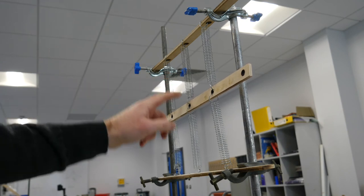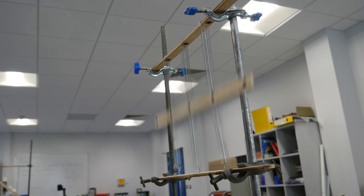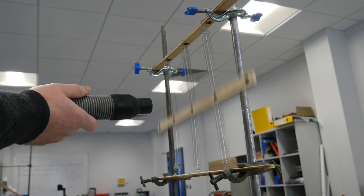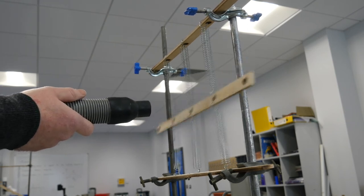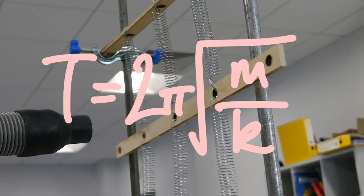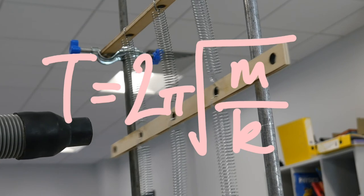So this one's stiffer because it's got three springs in parallel with each one. So you see it's got a higher natural frequency because the time period of a mass-spring system is given by the equation t equals 2π root m over k. So stiffer means shorter time period, therefore higher frequency.